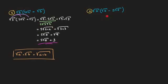Before working through the second example, let me quickly point out that as soon as we had seen the square root of 3 times the square root of 3, we could have stated right away that that was just equal to 3. If you're comfortable with that, by all means do so.